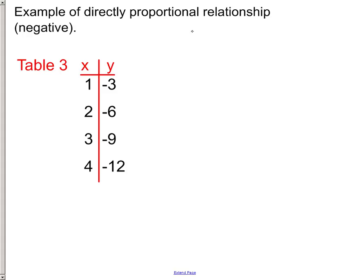Negative 3 divided by 1 is negative 3. Negative 6 divided by 2 is negative 3. Negative 9 divided by 3 is negative 3. And negative 12 divided by 4 is negative 3. So there's our rate of change. They're all the same. They're all constant. And they're negative. So yes, it's directly proportional relationship, but it's negative.